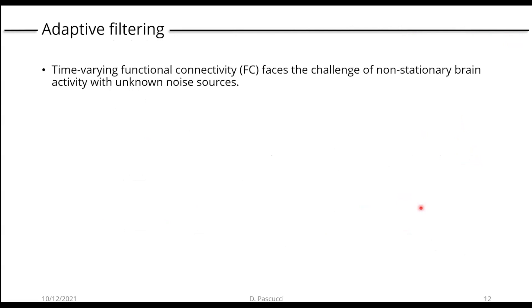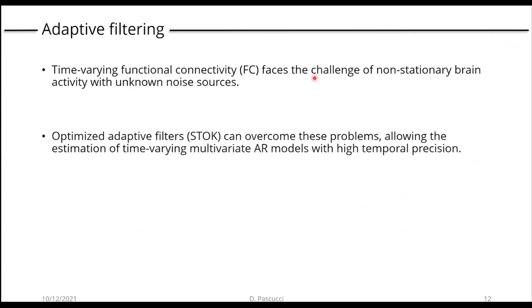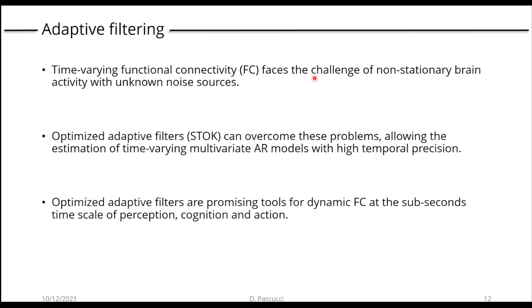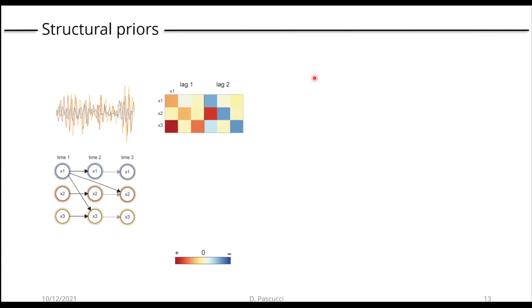To conclude this first part: time-varying functional connectivity faces several problems, including the challenge of modeling non-stationary signals constantly affected by unknown noise sources. Optimized adaptive filters seem to overcome these issues and are promising tools for estimating time-varying multivariate autoregressive models with high temporal precision — essentially the temporal precision of your sampling rate. This can be very useful for modeling functional connectivity changes during event-related activity, as recorded in tasks about perception, cognition, and action.